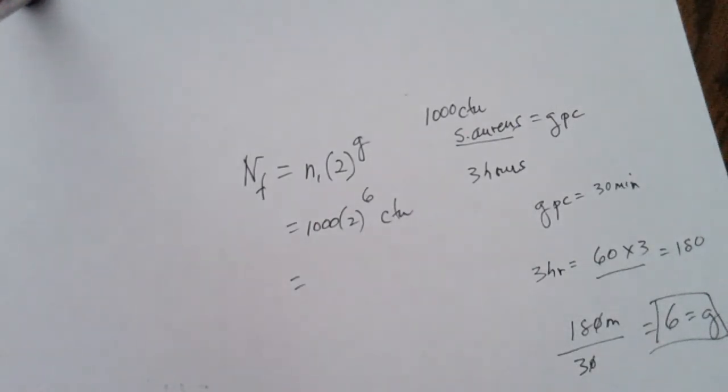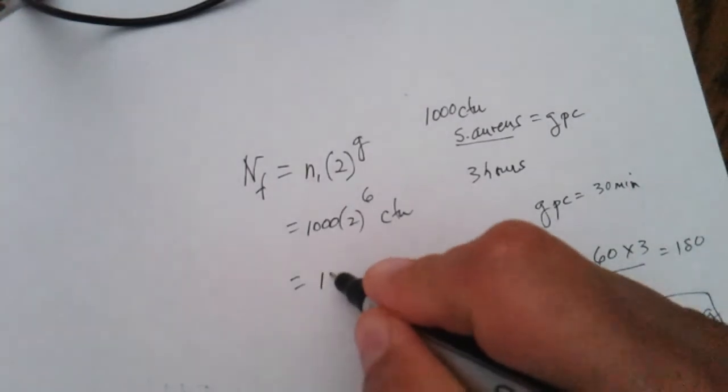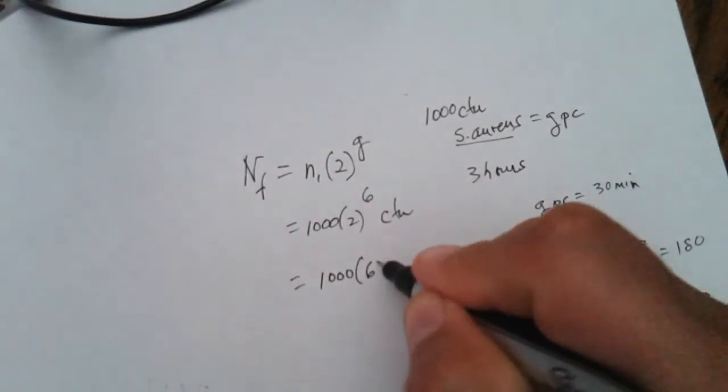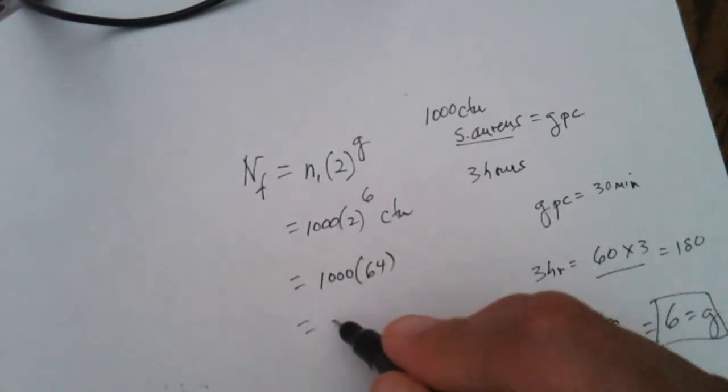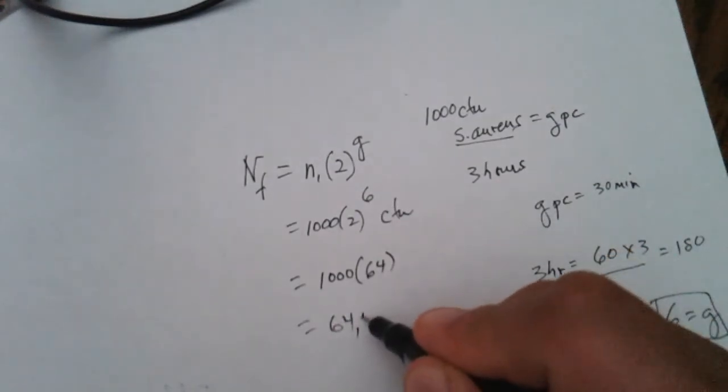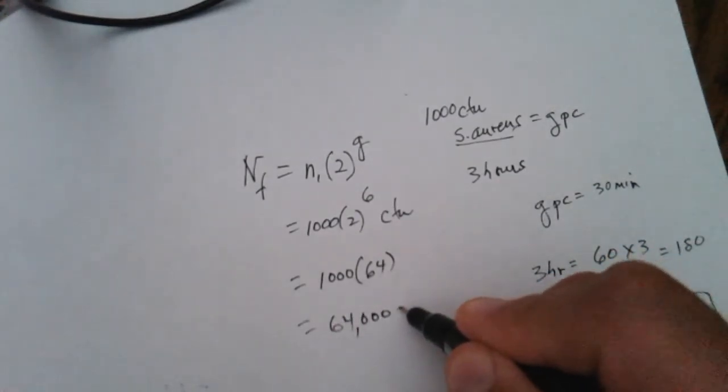So it's really 2 to the exponent of 6, which is what? 2 to the exponent of 6 is equal to 64. So it's 1,000 times 64, which is equal to 64,000 CFUs.